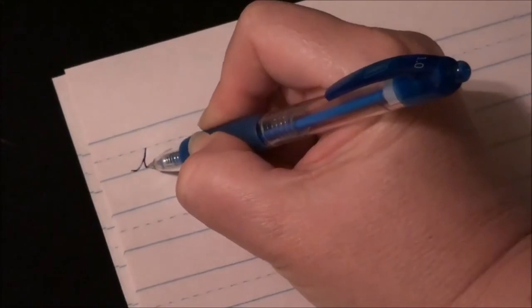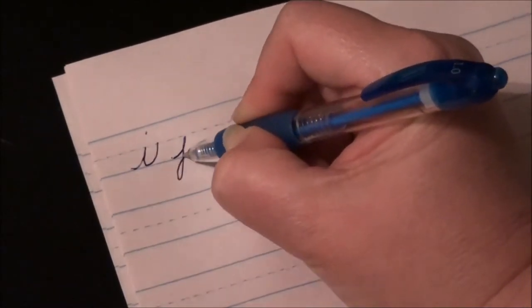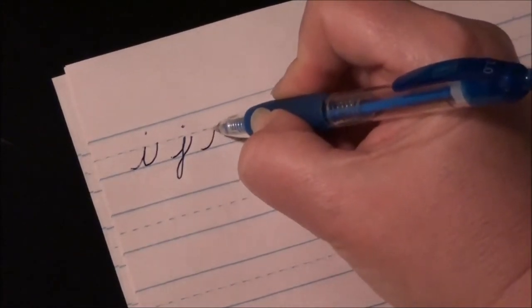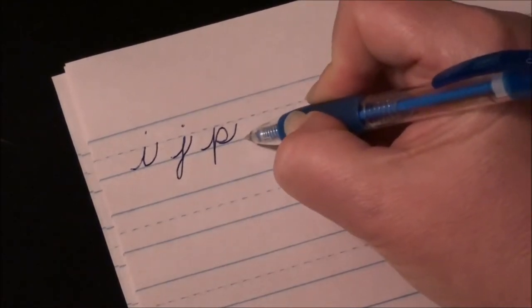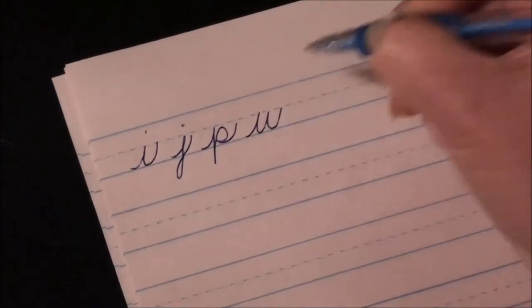Okay, in this lesson we're going to learn lowercase r, but let's review our upstroke letters first: I, J, P, U, and our last one that we made was W.